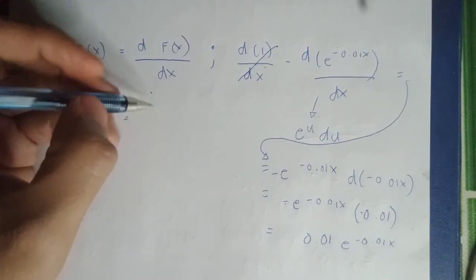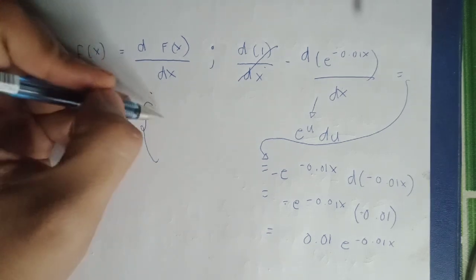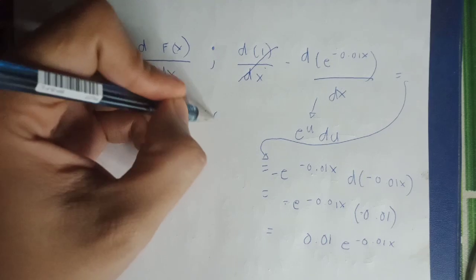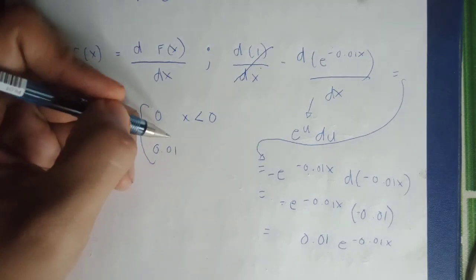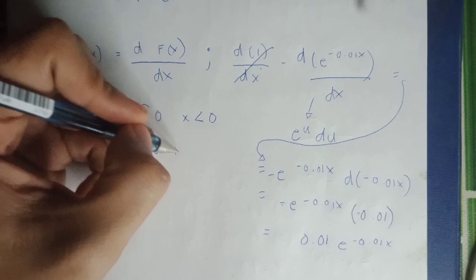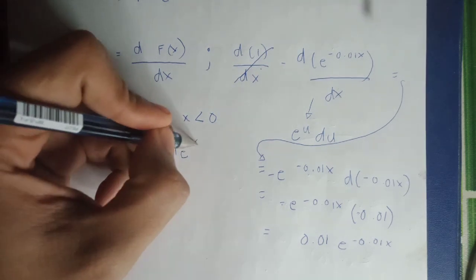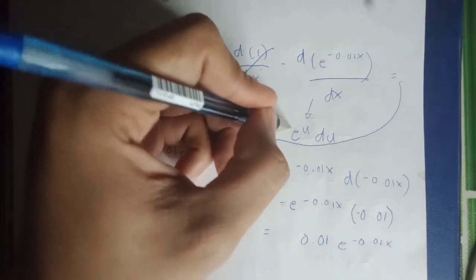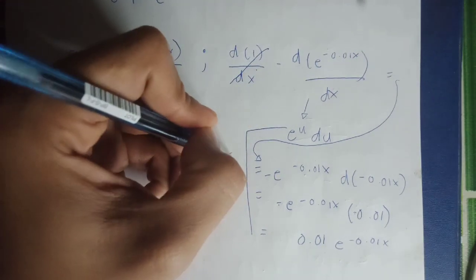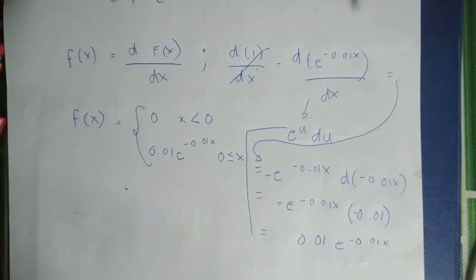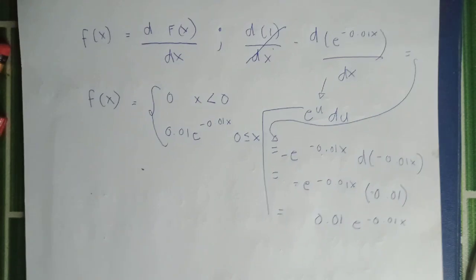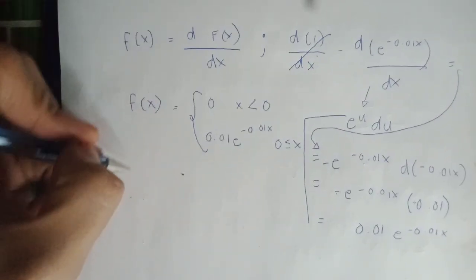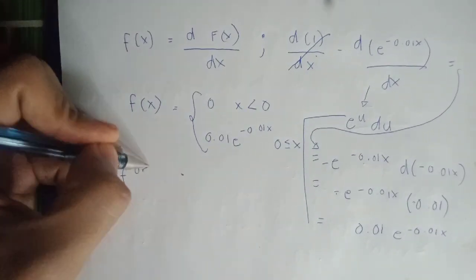Ito na yung gagamitin natin for 1 minus e raised to negative 0.01x. Substitute na natin yun. Ito na yung gagamitin natin: 0.01e raised to negative 0.01x for 0 less than or equal to x. Ngayon, nakuha na natin yung para dyan. Makukuha na natin yung probability kasi gagamitin natin yun.